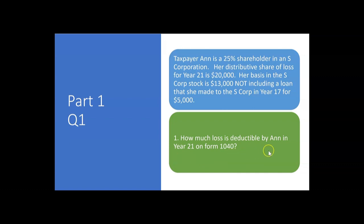What do they want to know? How much loss is deductible by Ann in year 21 on Form 1040? So the S-Corp had a loss, her share of the loss is $20,000. But her total tax basis is $13,000 stock basis plus $5,000 debt basis, so her total tax basis is $18,000. Can she use all $18,000 and deduct that much loss in year 21 since her share of the loss is $20,000? She can't deduct all $20,000 because she doesn't have enough tax basis. Do we combine the stock basis of $13,000 and the loan basis of $5,000 to allow her an $18,000 loss deduction in year 21?